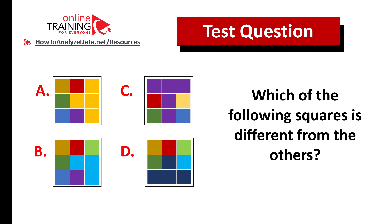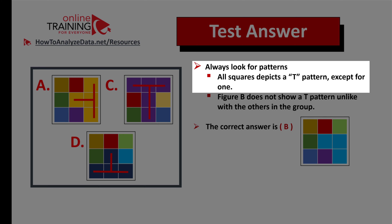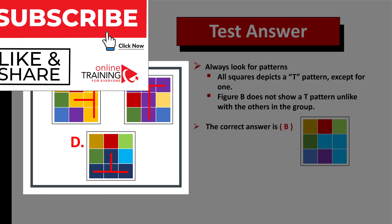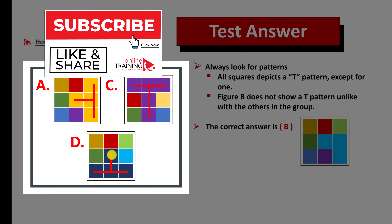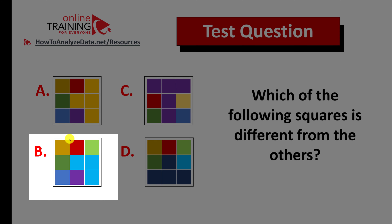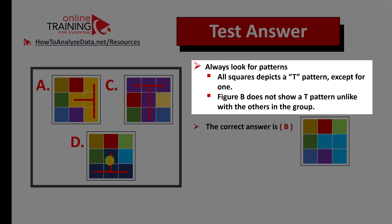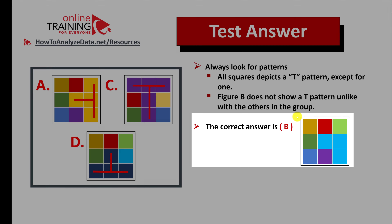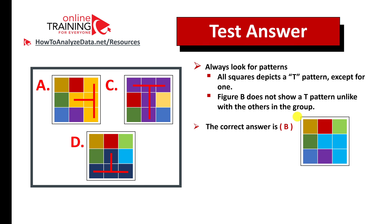Always look for patterns. All squares depict a T pattern except for one. Square a has a yellow T pattern, square c has a purple T pattern, and square d has a dark blue T pattern. Square b does not have any T pattern, making it substantially different. The correct answer is choice b.